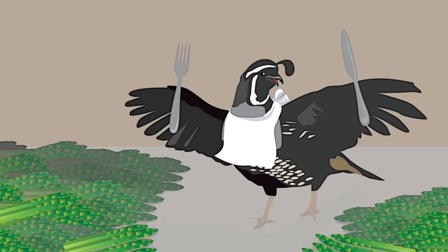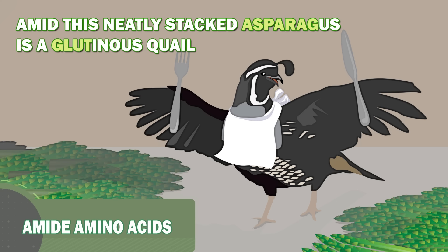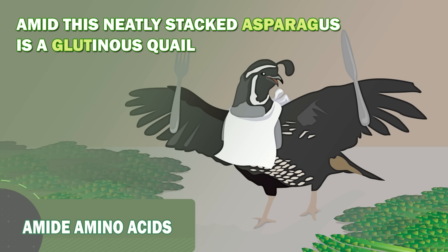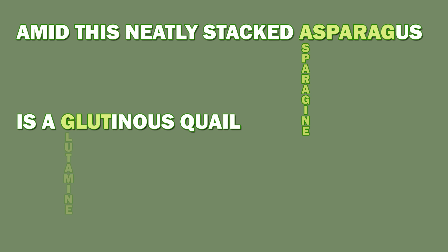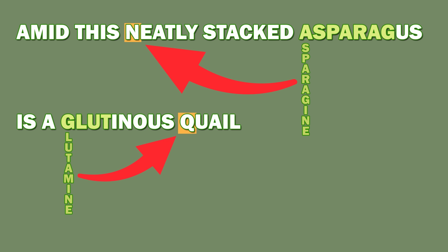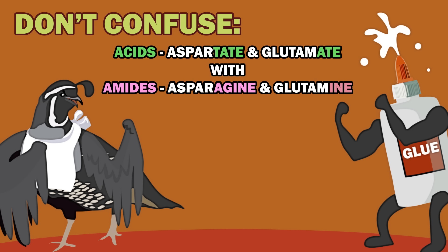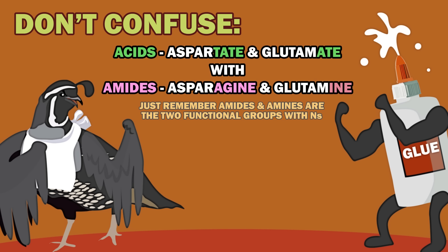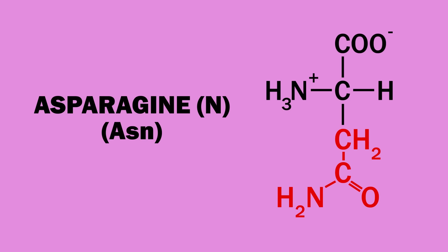The amide amino acids are so named because they have an amide functional group. A useful mnemonic is: amid this neatly stacked asparagus is a gluttonous quail. The two amide amino acids are asparagine and glutamine. The one-letter abbreviation for asparagine is N and for glutamine it's Q. Since the three-letter abbreviations can't be the same as the acid amino acids, they are ASN for asparagine and GLN for glutamine. Be careful not to confuse the acid amino acids with the amide amino acids — remember the amide ones end in -ine. Glutamine is easy: what happens to those who are gluttonous? They get bigger — glutamine gets an extra carbon.